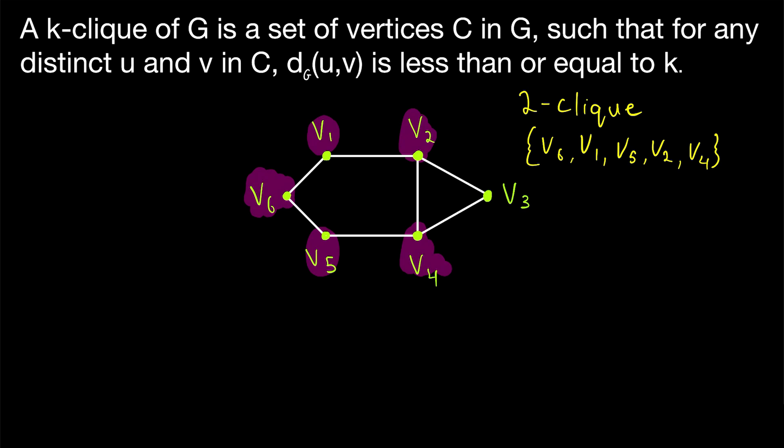If we consider a k-click with a weaker restriction, like a three-click, for example, then we would be able to include v3 with all of these vertices in a three-click. That's because all the vertices in the graph are within a distance of three from each other. So they could all go in a three-click. Just like with maximum clicks, maximum k-clicks are not necessarily unique.